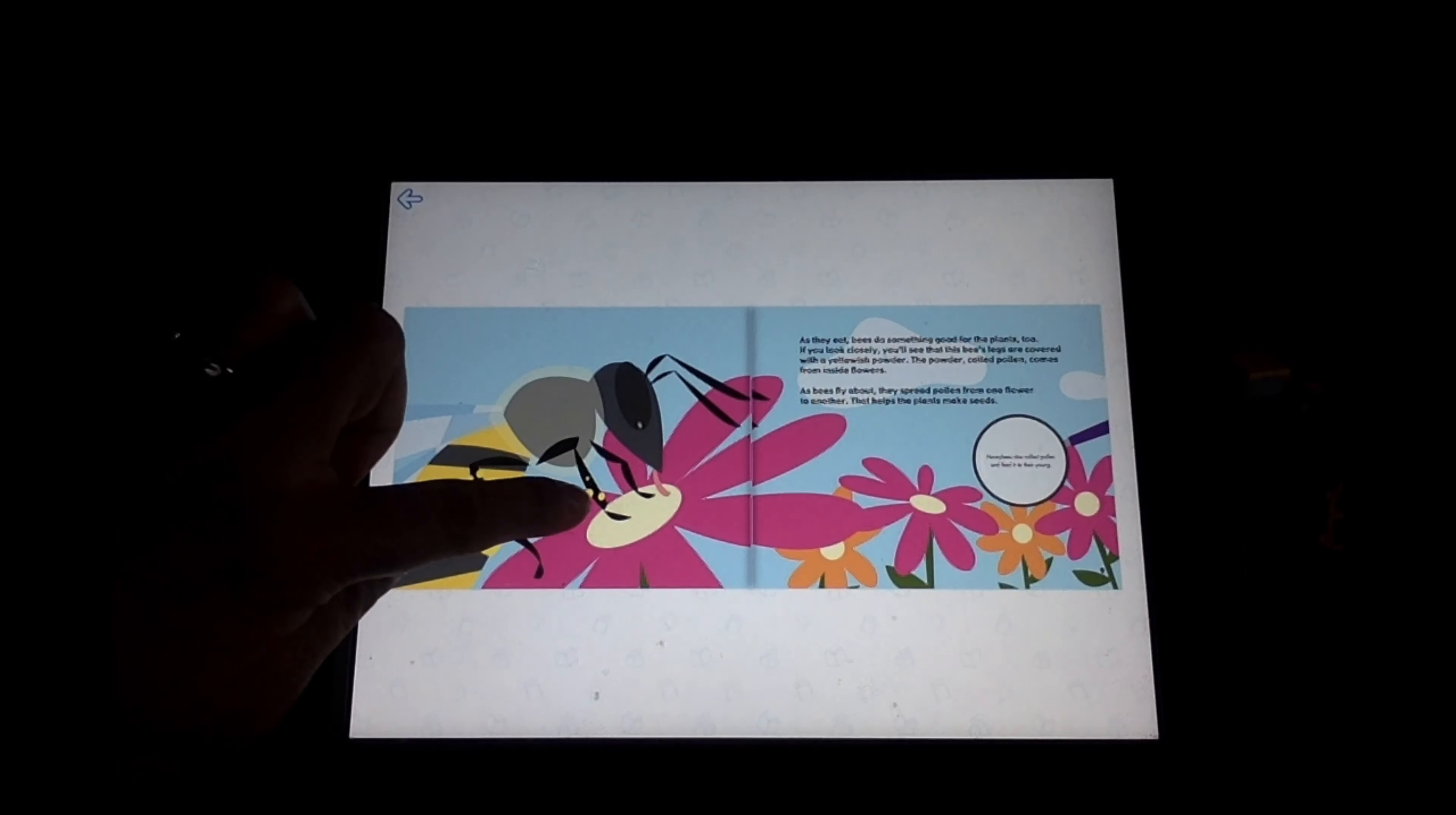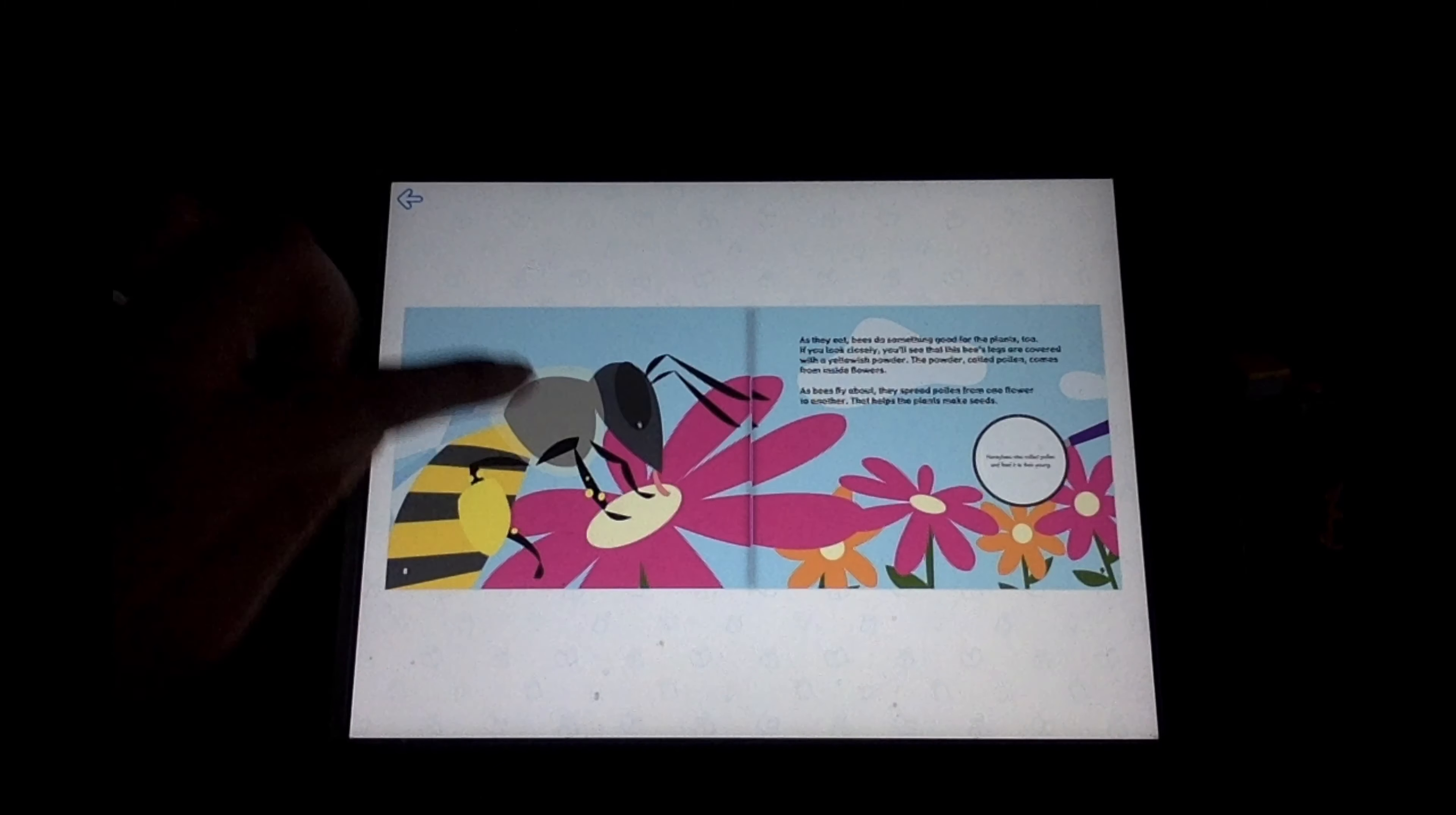So as you guys can see right in the bee's legs, these little yellow circles called pollen. As bees fly about, they spread pollen from one flower to another that helps the plants make seeds.